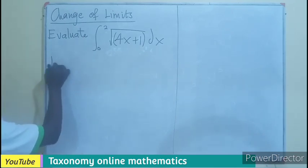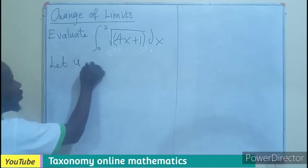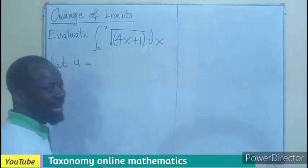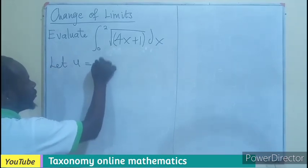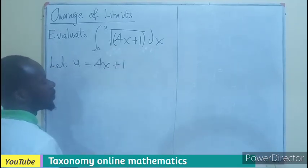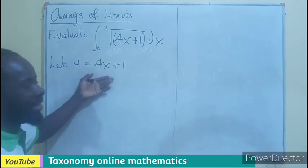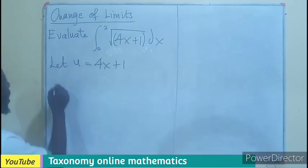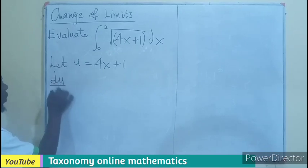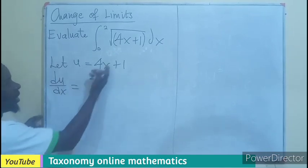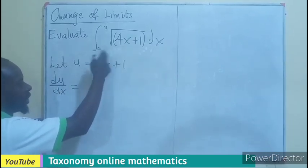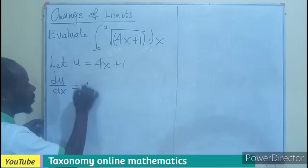This we are going to have, let our U equal to the function under the root, which will be 4X plus 1, which we can easily differentiate. So, our DU DX is going to be the differentiation of this, which will give us only 4.